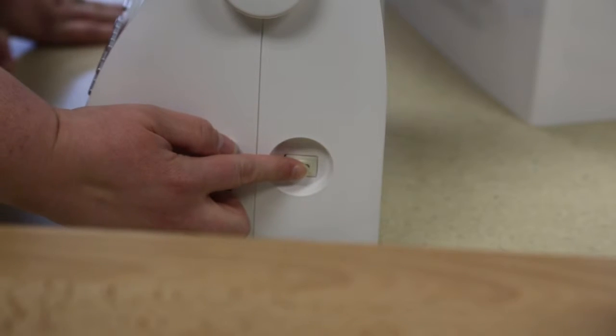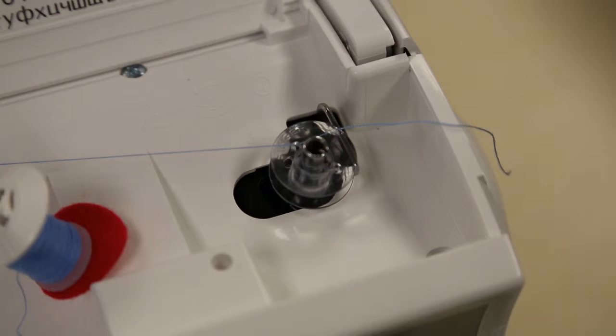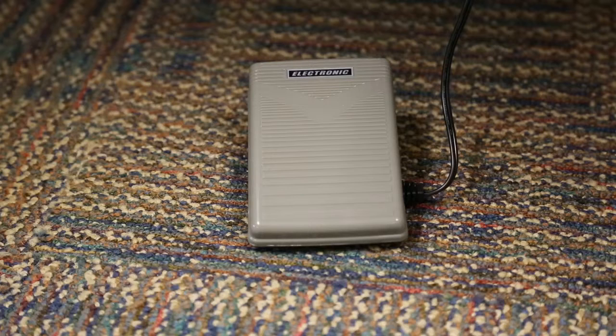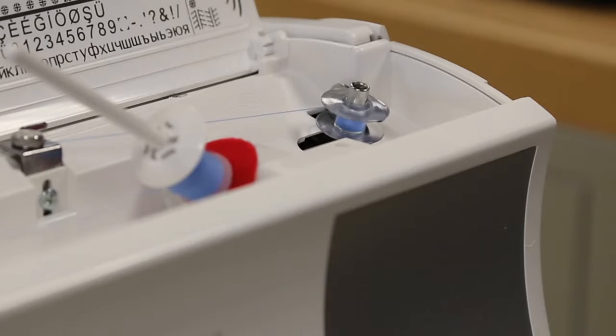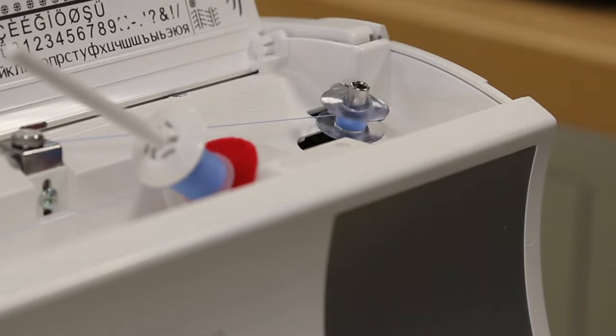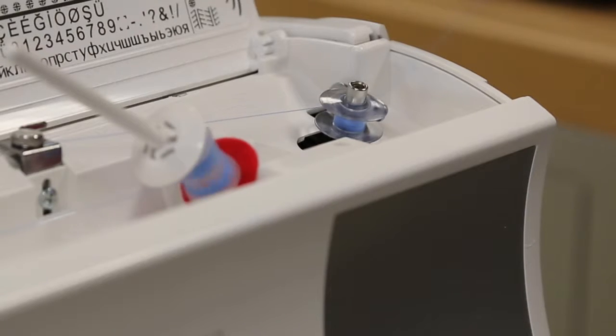Turn on the machine. Hold the end of the thread and start the machine by pressing the foot pedal. You may stop winding the bobbin by releasing the foot pedal, or the bobbin will stop automatically when it's full. Next, push the bobbin and spindle to the left. Remove the bobbin from the spindle and cut the thread.